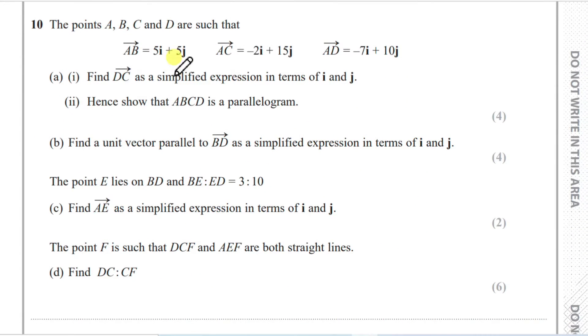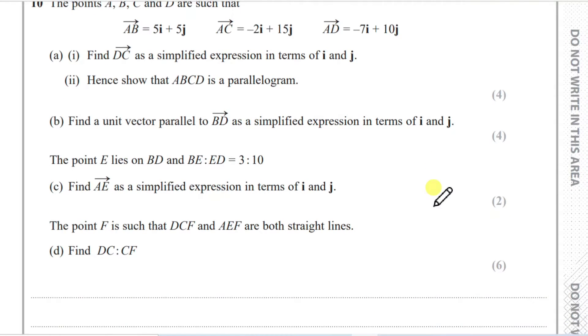Now, points A, B, C, and D are such that the vector AB is given by the vector i plus 5j, AC is that, and AD is this. Find DC as a simplified expression in terms of i and j. So going from D to C, let's firstly understand how we draw this. It helps a lot to draw vectors.